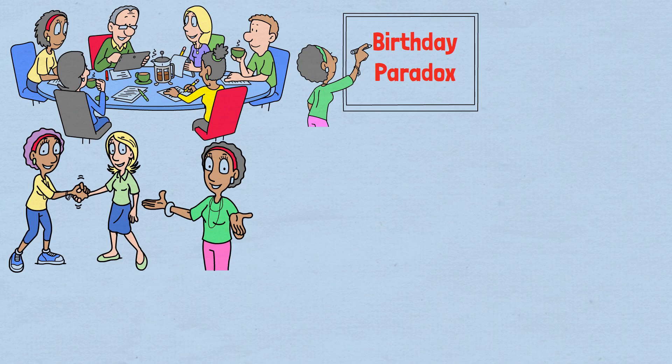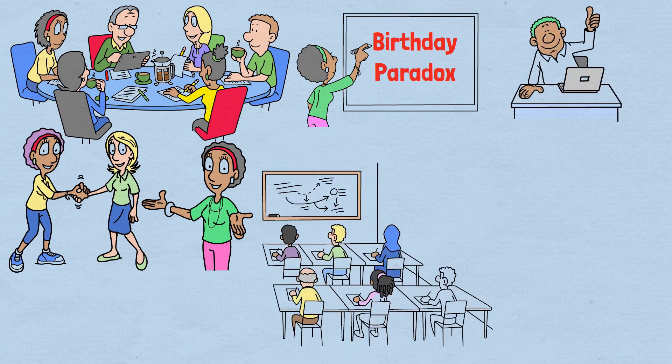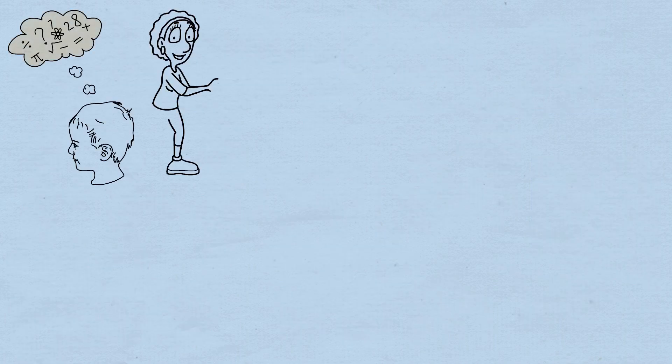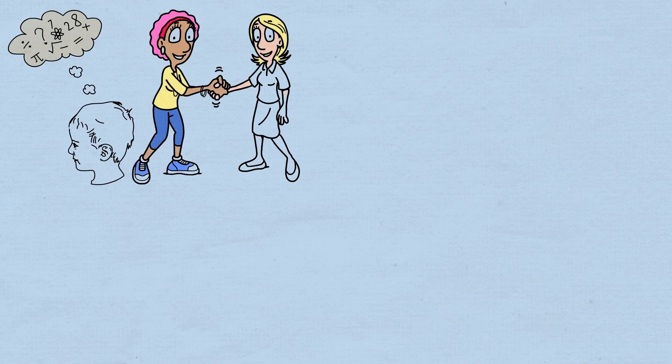The beauty of the birthday paradox is that you can easily test it in real life. Next time you're in a class, at an office meeting, or at a party with about 23 people, ask everyone for their birthdays. According to our mathematics, about half the time, you'll find at least one shared birthday.